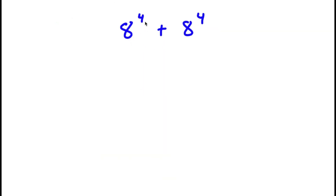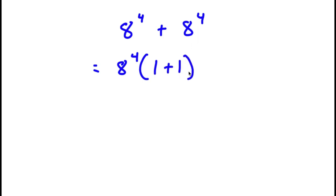In this problem I have 8 to the power of 4 plus 8 to the power of 4. To solve this, I'm going to factor out 8 to the power of 4. So I have 8 to the power of 4 divided by 8 to the power of 4, which is 1. So I have 8 to the power of 4 times 1 plus 1, which simplifies to 8 to the power of 4 times 2.